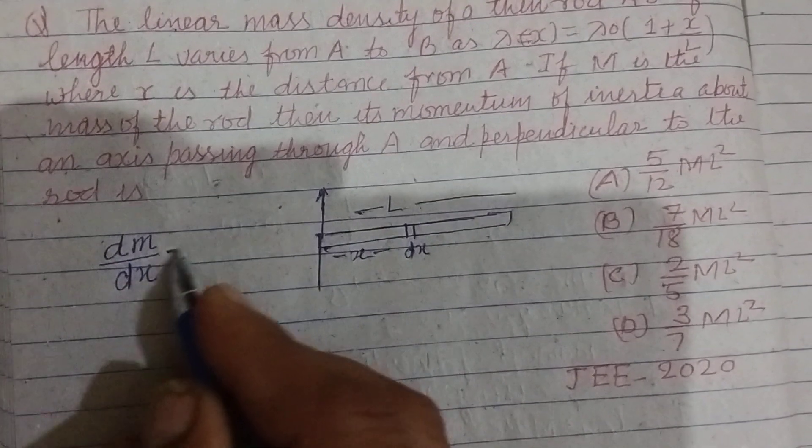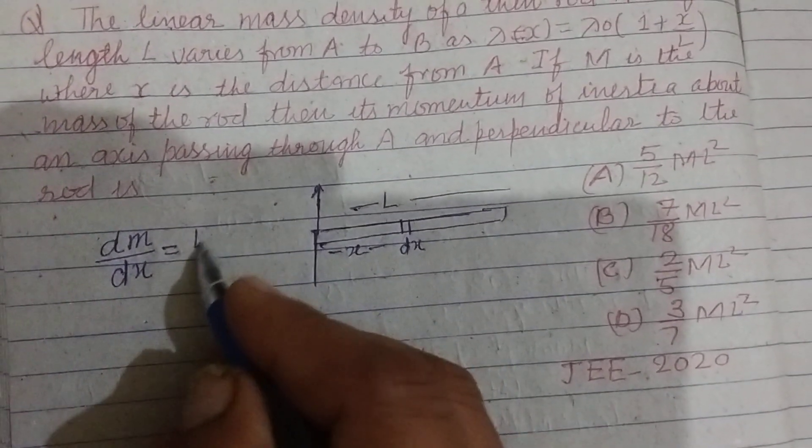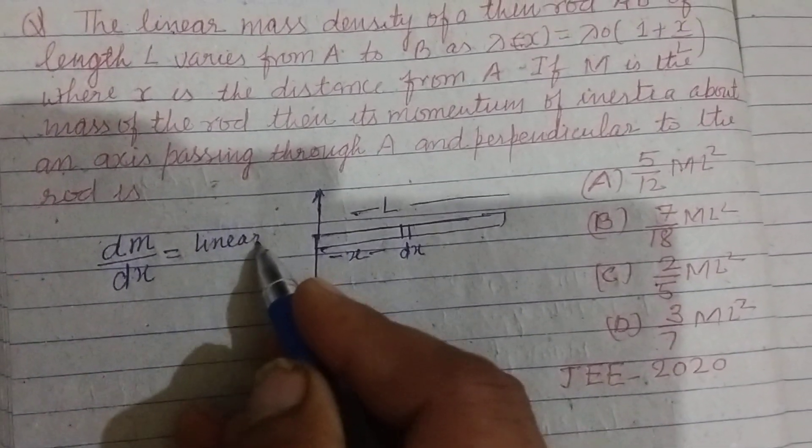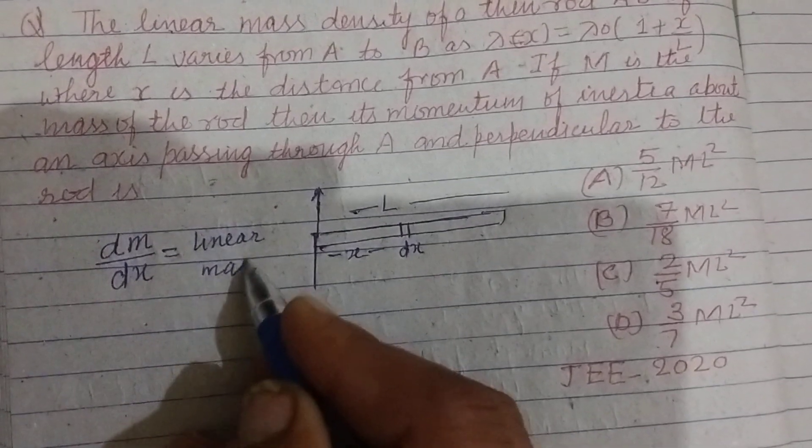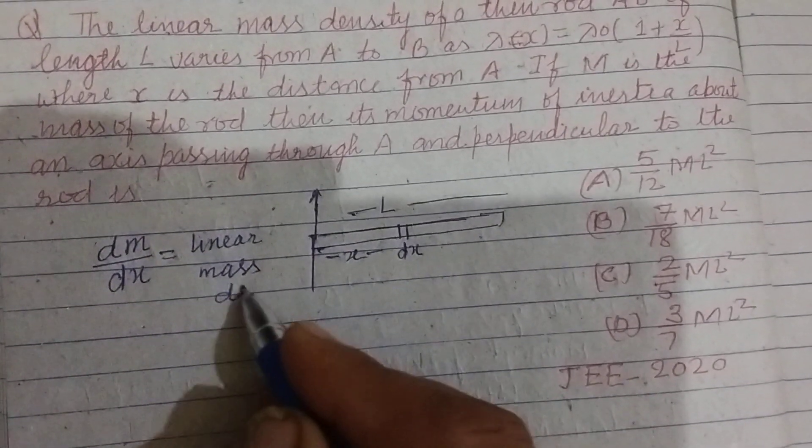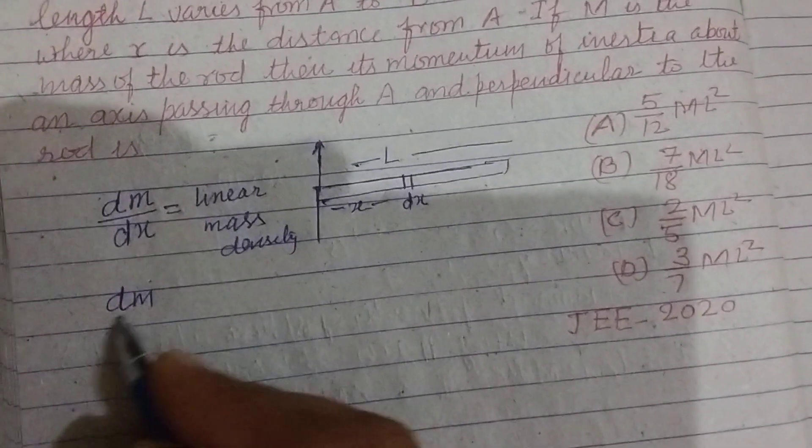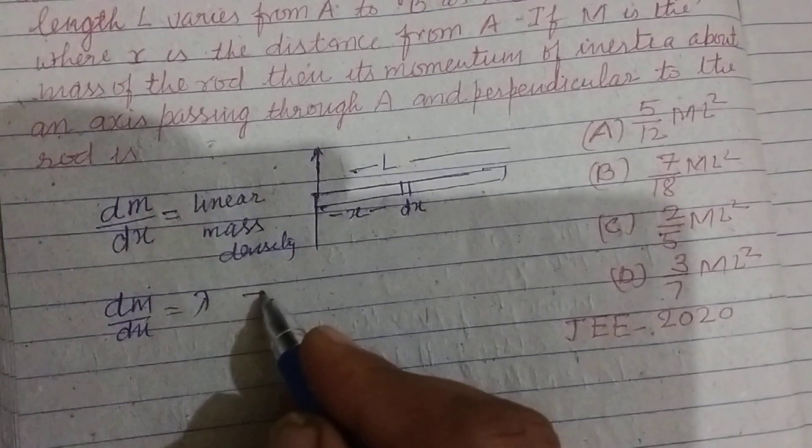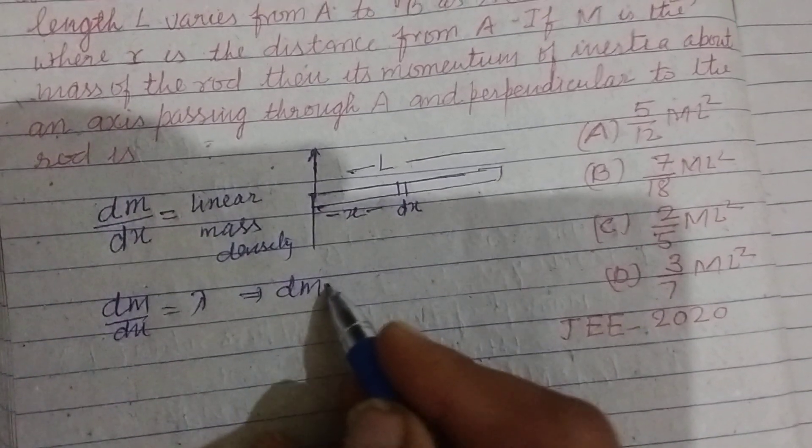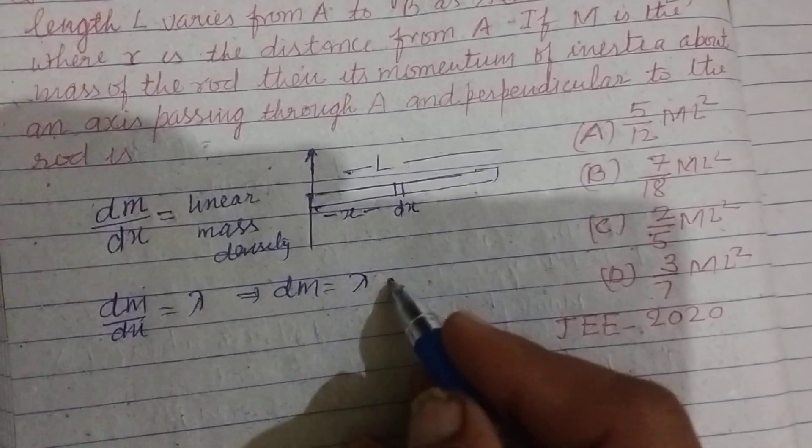So dm over dx equals linear mass density. dm over dx equals lambda. It means dm equals lambda into dx.